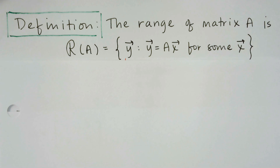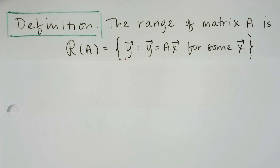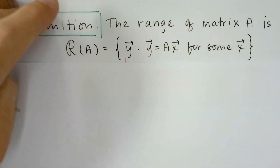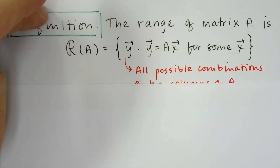In this video we're going to be talking about the range of a matrix. On screen you can see the definition of the range of a matrix — the set of all vectors y, where y can be written as A times x for some vector x. Since we know that A times x is a manipulation of the columns of A, we can look at the range of A as all possible combinations of the columns of A.